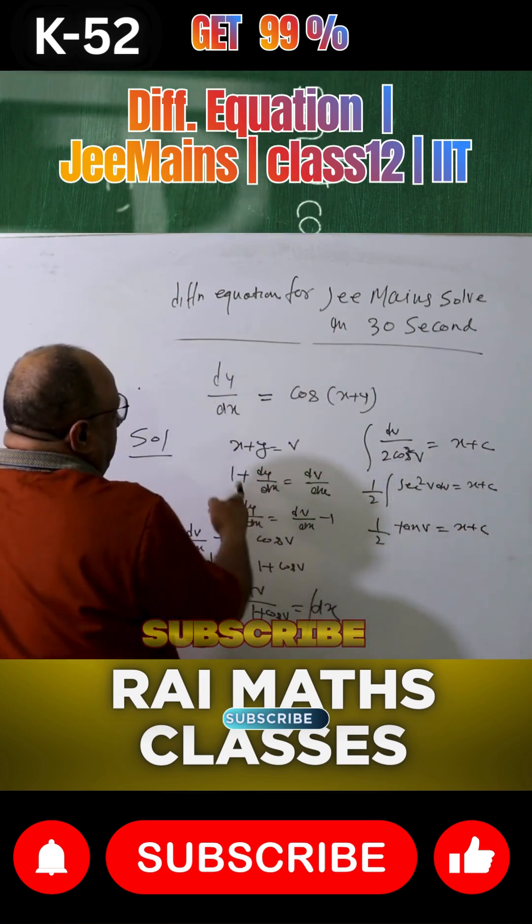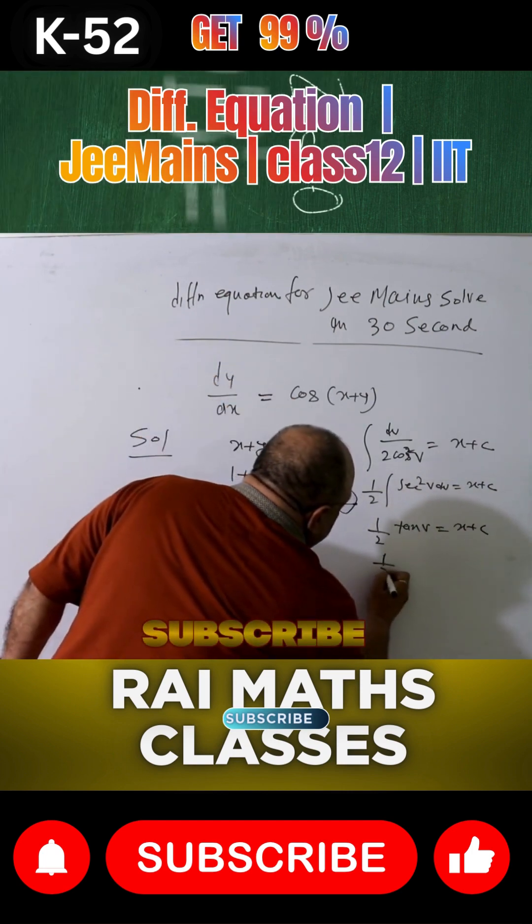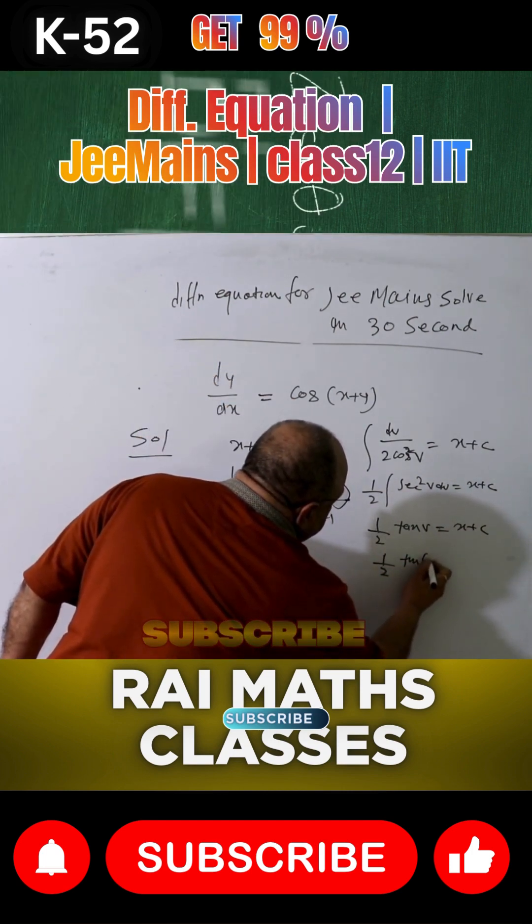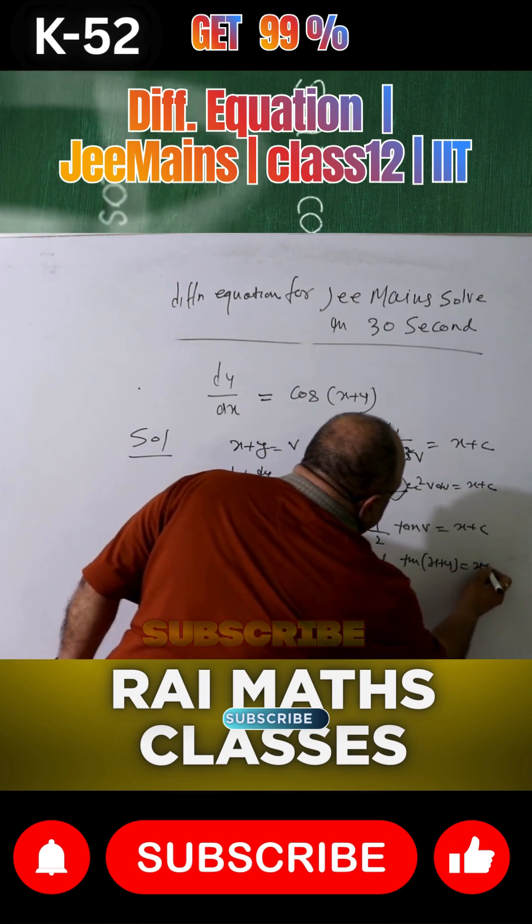tan v by 2 equals x plus c. And v equals x plus y. So tan of x plus y equals x plus c.